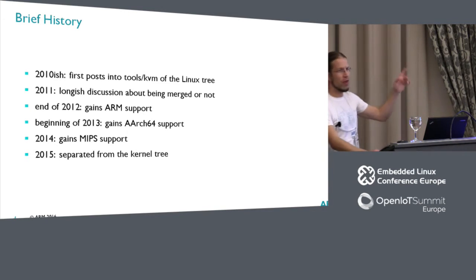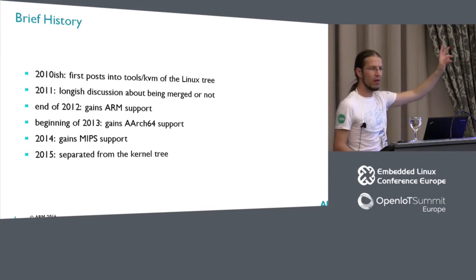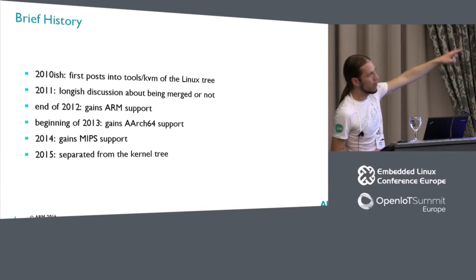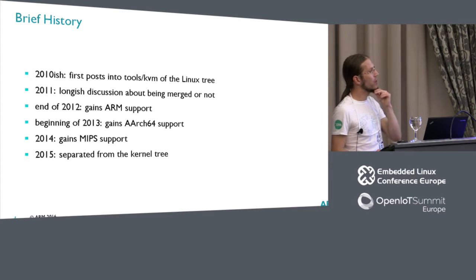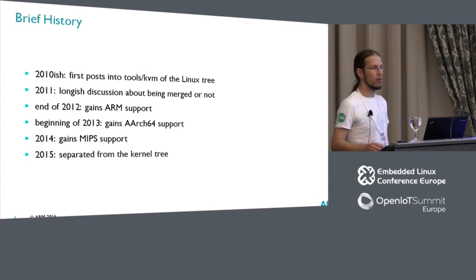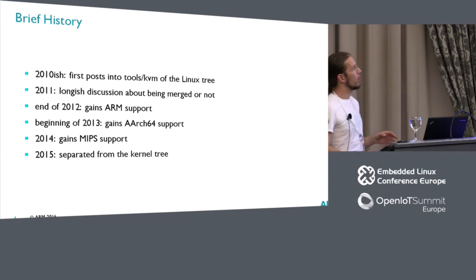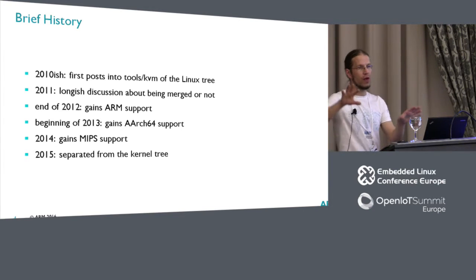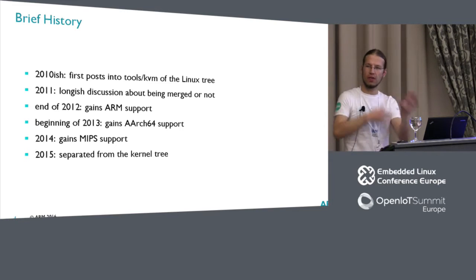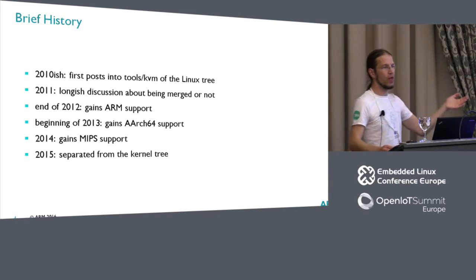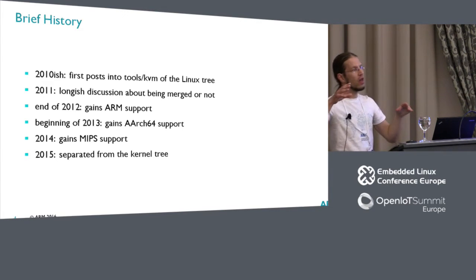If you Google for KVM tool and some presentations, there are some from the 2011 timeframe that give you a more detailed history about the first time of life of KVM tool. The first posts about it came in 2010. They were meant to be in the tools/KVM directory of the Linux tree — it was not a separate repository. It was part of the Linux tree, and the idea was that, similar to what Perf does, you have a user space counterpart for all the kernel features that get implemented.